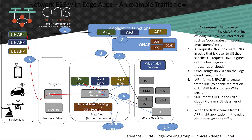Basically, ONAP picks which edge cloud to use, figures out the characteristics, configures it, and then brings in the VNF. If you look at the flow: first is the request, second is the ONAP request, third is ONAP bringing up the VNF. Then the application function informs the SMF to create traffic rules, so that traffic gets routed to this particular edge. All the control functions are done, and then the UE app gets connected to this particular edge cloud. As you see, there are a lot of moving pieces in this whole puzzle — the preparation, ensuring that state management is done, and so forth.